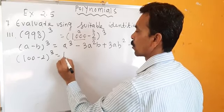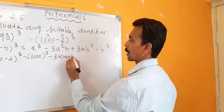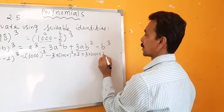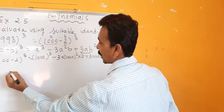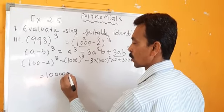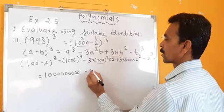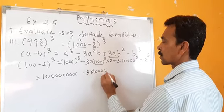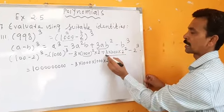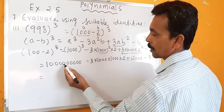So it becomes: 1000 cube minus 3 into 1000 squared into 2, plus 3 into 1000 into 2 squared, minus 2 cube. 1000 cube is 1,000,000,000 (9 zeros). 3 into 1000 squared into 2 is 6,000,000. Plus 3 into 1000 into 4 is 12,000. Minus 8.